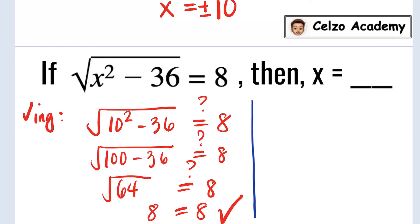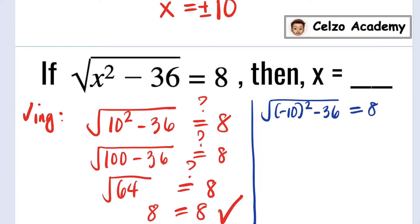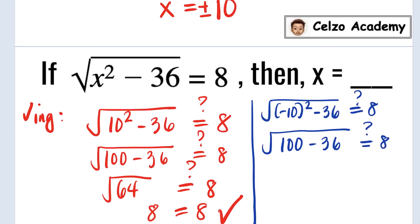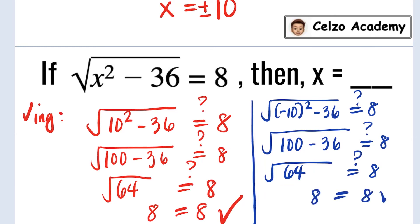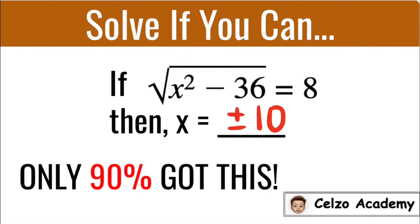Now let's plug in x equals negative 10. Substituting x equals negative 10, we have the square root of negative 10 to the second power minus 36 is equal to 8. Simplifying the radicand, negative 10 squared means negative 10 times negative 10, which is 100, and 100 minus 36 is equal to 8. So the same as before, 100 minus 36 is 64, and the square root of 64 is also equal to 8. So in this problem there are two answers: x can be positive 10 or negative 10.